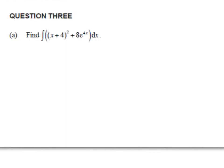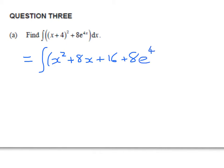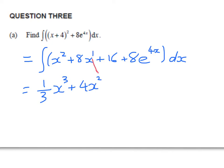The first one — find this integral. We want to start out by expanding what's in those brackets. So it's going to be x squared plus 8x plus 16 plus 8e to the power of 4x, dx. It's just an antiderivative, about at Year 12 level. So 1 third of x cubed plus 4x squared.